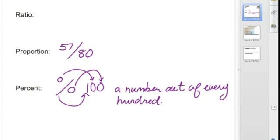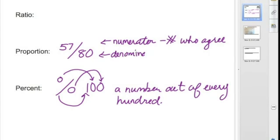It's being written as a fraction. So the top number in our fraction terms is our numerator, and that's usually the number of people that agree with the comparison statement. And the denominator is usually the number of people they ask the question. So in this case, they probably surveyed 80 people, and 57 agreed with what they asked.